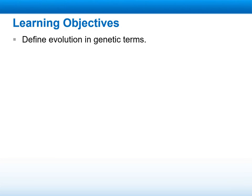Our learning objective for this week is to define evolution in genetic terms — meaning how the genes and the genetic information transfer from one generation into another, and how they evolve to become a new generation or to develop a new characteristic found in the same genes or the same organisms.